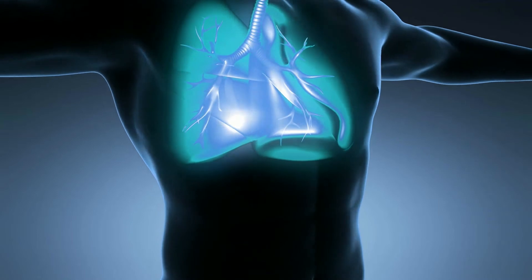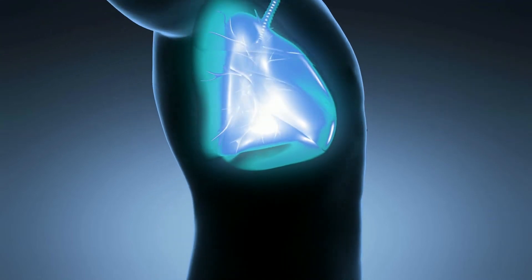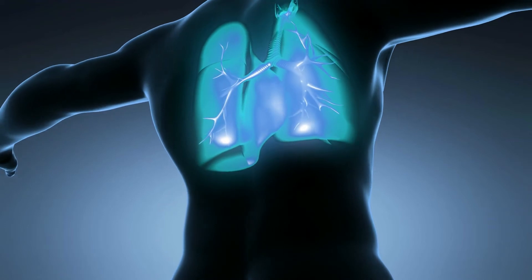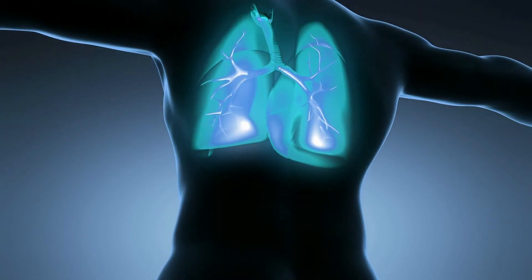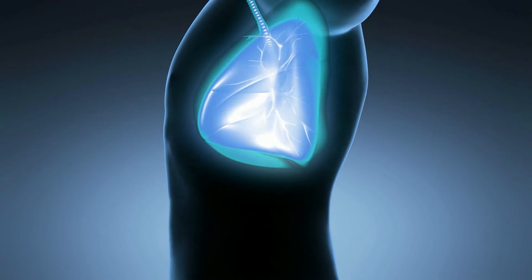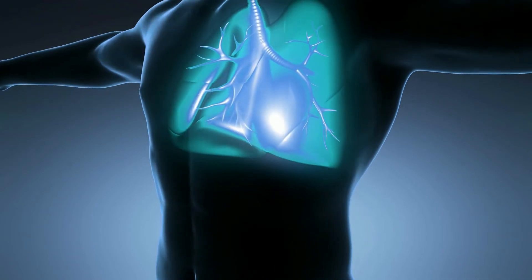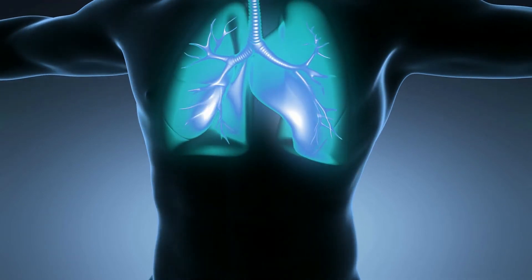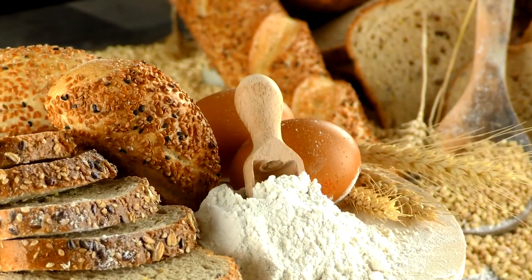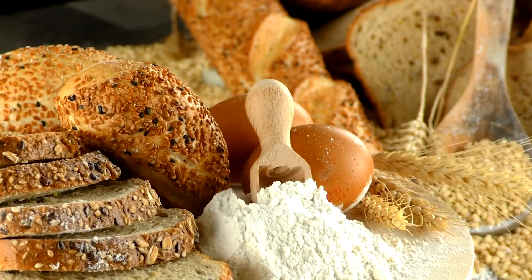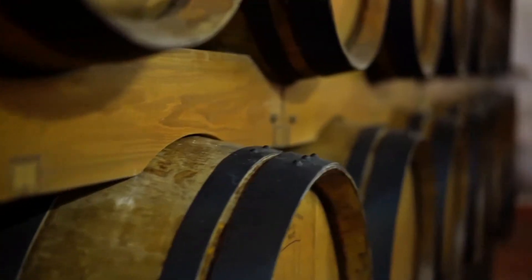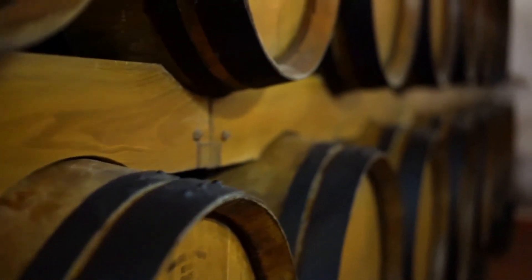CO2 is produced by all aerobic organisms when they metabolize organic compounds to produce energy by respiration. It is returned to water via the gills of fish and to the air via the lungs of air-breathing land animals, including humans. Carbon dioxide is also produced during the processes of decay of organic materials and the fermentation of sugars in bread, beer, and winemaking.